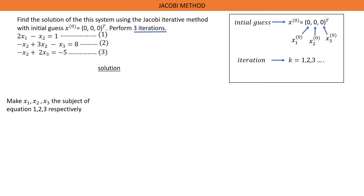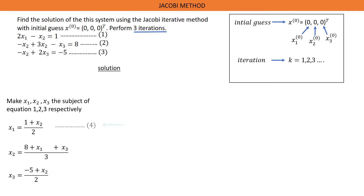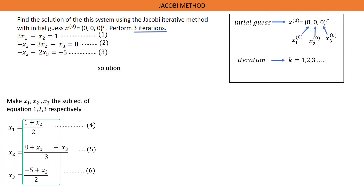After making S1 the subject of equation 1, this is what we get. After making S2 the subject of equation 2, this is what we get. And after making S3 the subject of equation 3, this is the equation we get. Let's name these equations 4, 5, and 6. The next step is to add iteration K on top of all S values on the left-hand side of equations 4, 5, 6, and add iteration K-1 on top of all S values on the right-hand side of equations 4, 5, and 6.